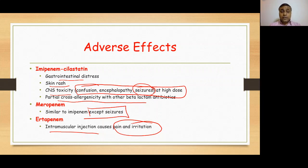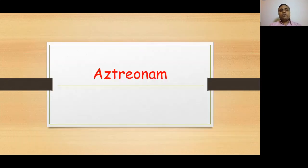By this we have covered three beta-lactam antibiotic groups: penicillins, cephalosporins, and carbapenems. In the upcoming lecture, we will talk about another beta-lactam antibiotic group, which is aztreonam. Hope you enjoyed the lecture — waiting for your feedback to improve. Thank you very much.